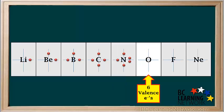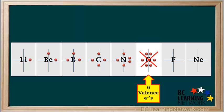Now we'll do oxygen. It is in group 16, so it has six valence electrons. To fit six electrons around the symbol, we need to have two lone pairs and two unpaired electrons. The two lone pairs are at right angles to each other, and the two unpaired electrons are also at right angles to each other. Some people show the Lewis diagram for oxygen with the two lone pairs across from one another, but this is not as useful when we consider bonding, so we won't use that arrangement for oxygen or any other elements in group 16.